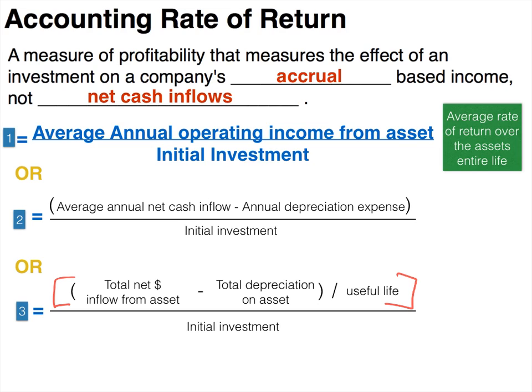Before moving on, let's briefly discuss total depreciation on the asset. If we depreciate an asset, the total depreciation will equal the cost of the asset unless there's a residual value. If there is residual value, we don't depreciate below it, so total depreciation equals cost minus residual value. If the problem doesn't mention residual value, assume it's zero and total depreciation equals the asset's cost.